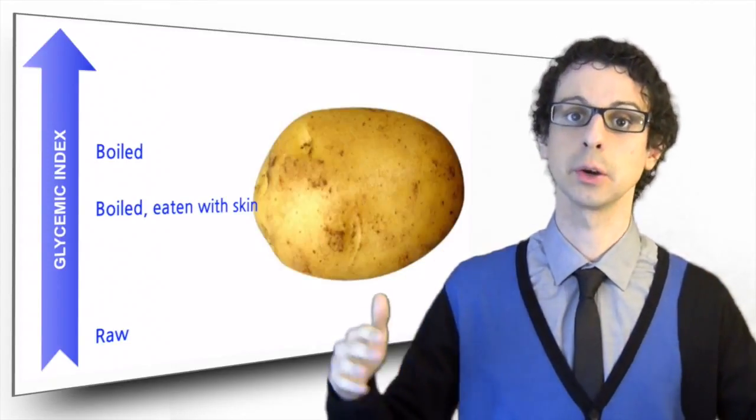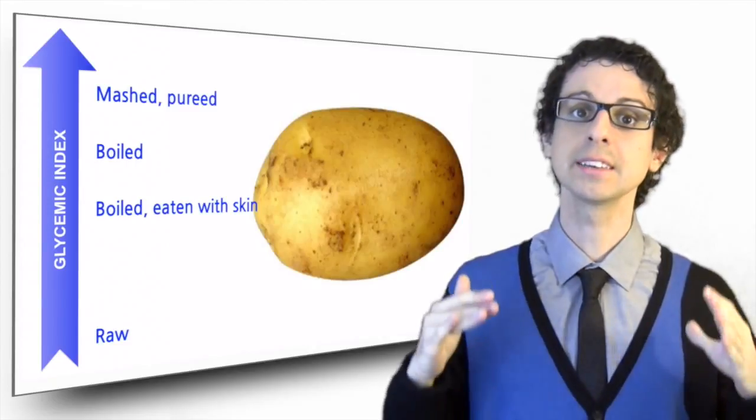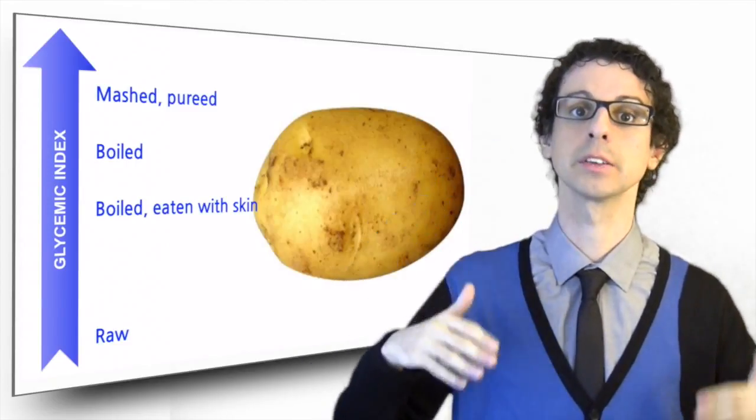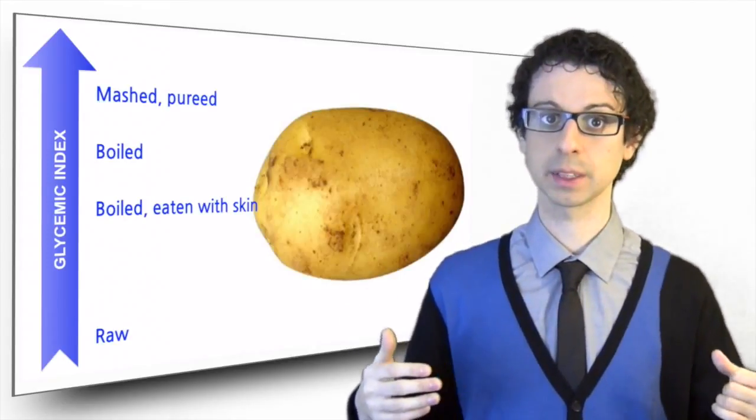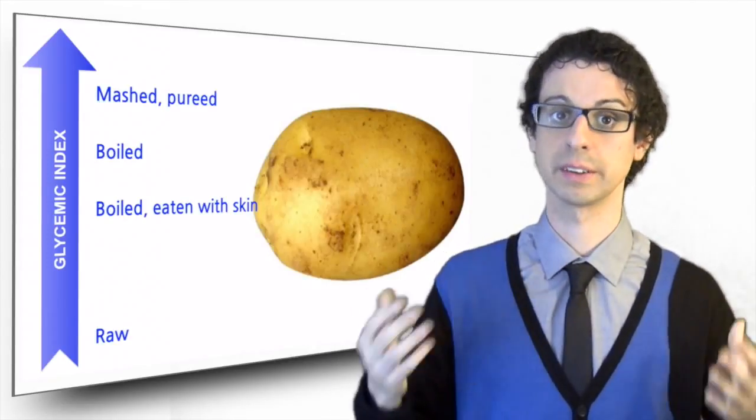Conversely, if we turn that potato into a mashed potato, its GI will further raise, because starch becomes even more accessible to our digestive enzymes, which will convert it to glucose even faster.